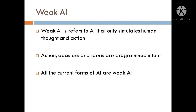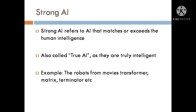Weak AI systems are not truly intelligent systems, but they act as intelligent systems. Strong AI refers to AI that matches or exceeds human intelligence. It is also called true AI, as they are truly intelligent. Examples include the robots from movies like Transformer, The Matrix, Terminator, and iRobot. Strong AI will not be limited to programmed responses; they will use clustering and association for processing data.